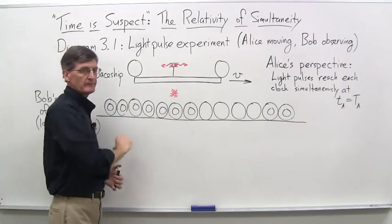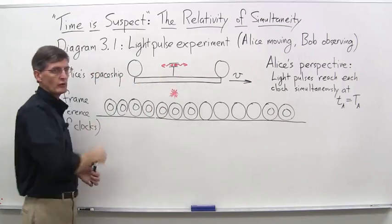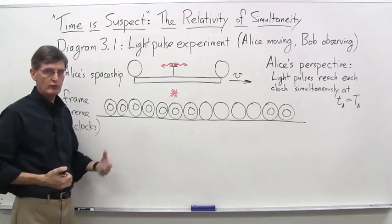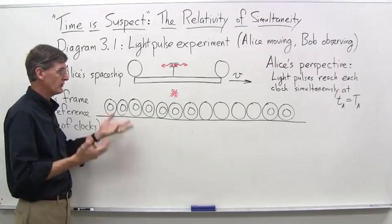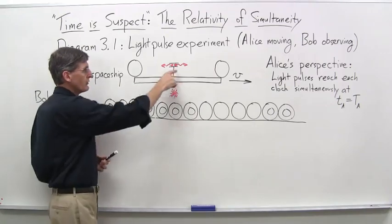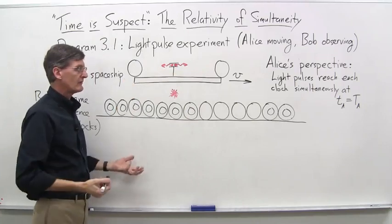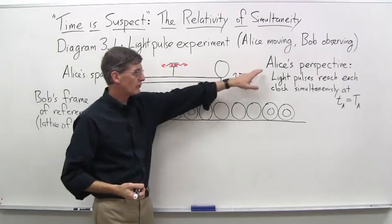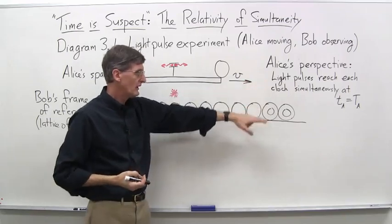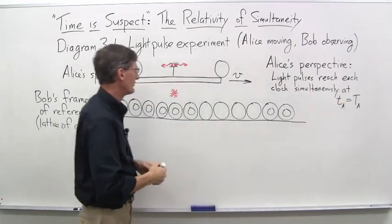So when she sets off the light pulses here, one going in that direction with speed C, the other going in the other direction with speed C, it's just like our first diagram two video clips ago where she's stationary. Her perspective is that the light pulses reach each clock simultaneously at some time sub Alice, T sub A, equals capital T sub A.